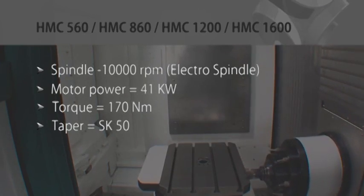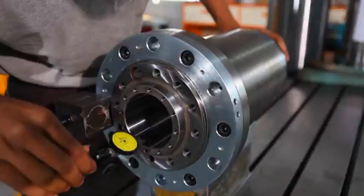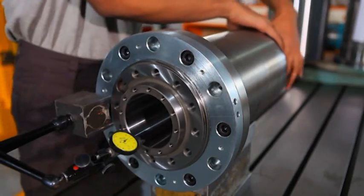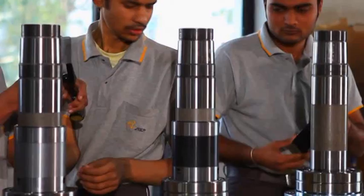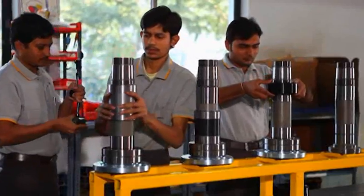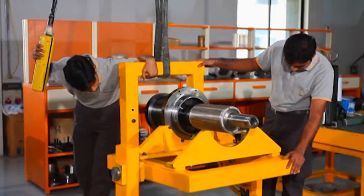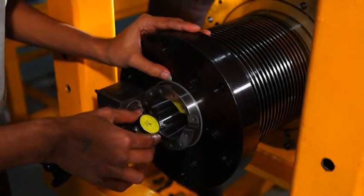HMC 560, 860, 1200, 1600 are equipped with 10,000 RPM, 41 kilowatt, 170 newton meter high torque built-in spindle motor with SK50 taper. These high torque built-in spindle motors with special temperature controlled chilling unit are standard for the entire HMC series, delivering best efficiency and maximum cutting performance. Angular contact bearing arrangement provides spindle's high axial and radial rigidity to support variety of machining tasks.